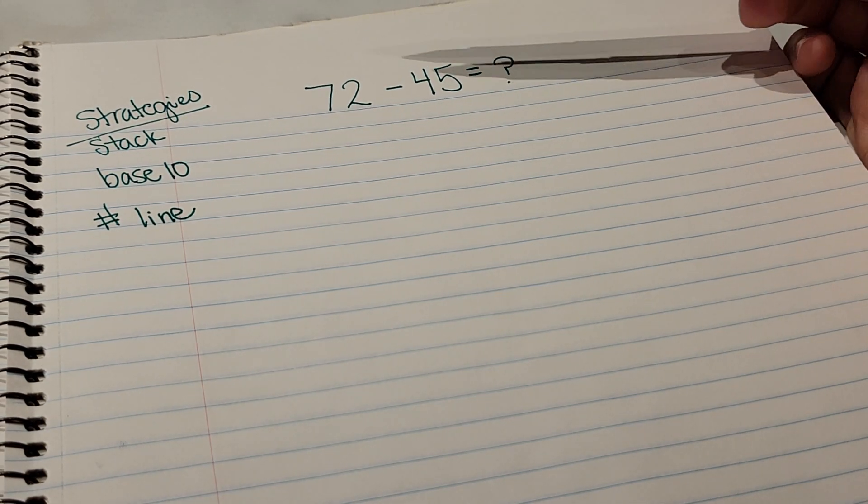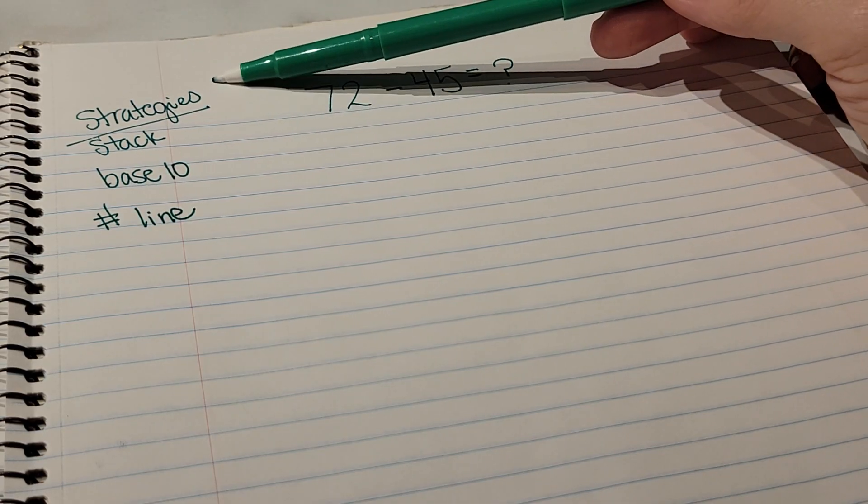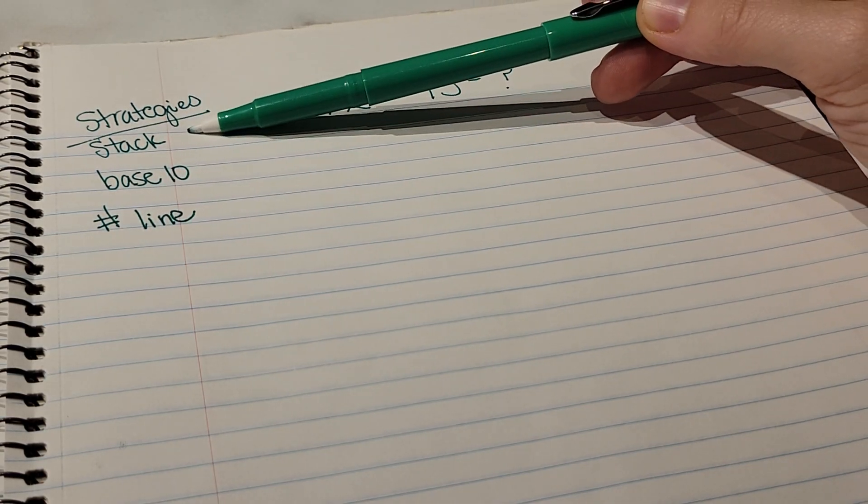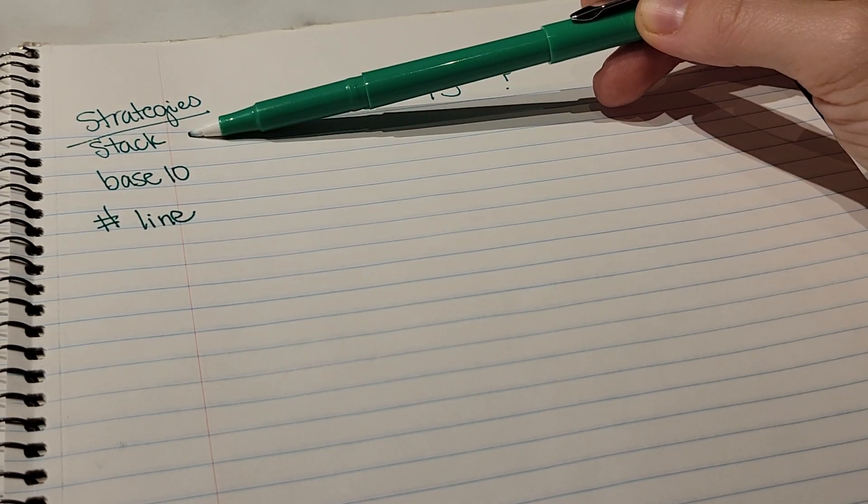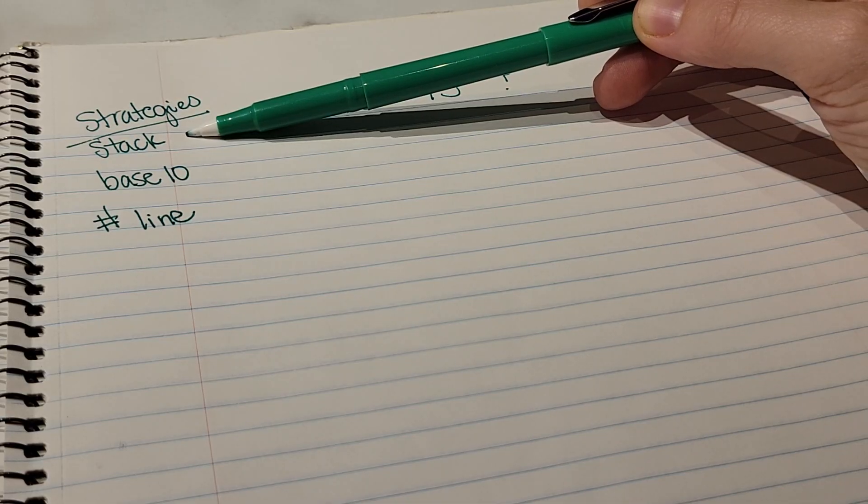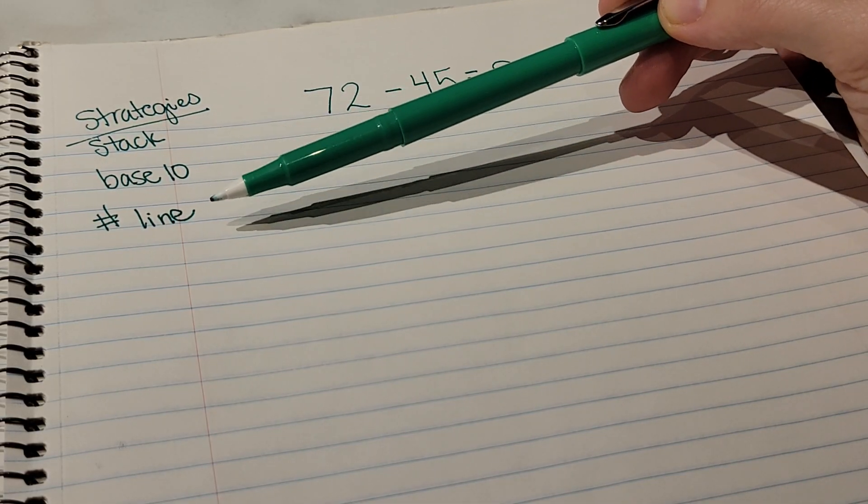When we're doing double digit subtraction, we have three strategies that we learned this week: the stacking strategy, which you are going to be most familiar with and probably what you learned in school, the base 10 strategy, and the number line strategy.